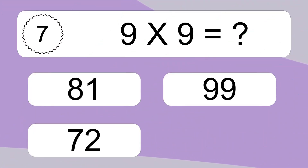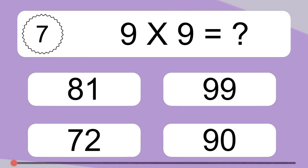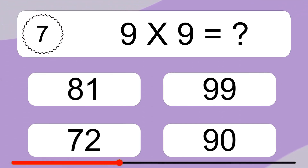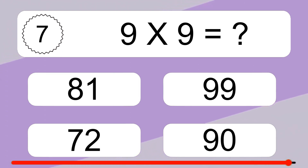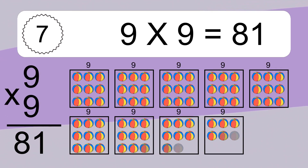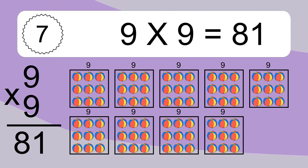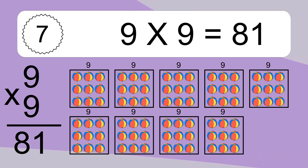9 times 9 equals what? 9 times 9 equals 81. We have 9 boxes, and each box has 9 colorful balls inside. If you count all the balls in all the boxes together, you will have 9 times 9 balls. This equals 81 balls.